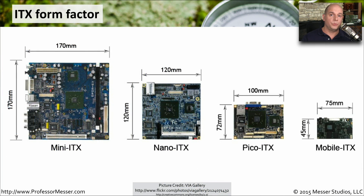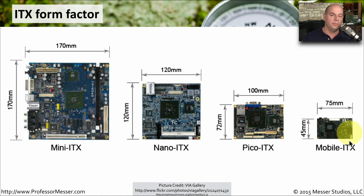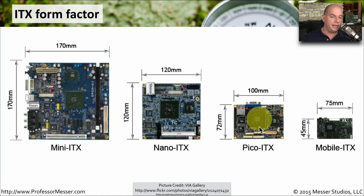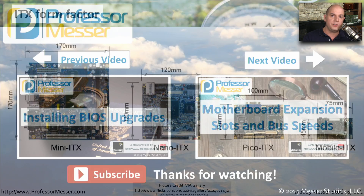If you thought the Mini ITX was small, look at these other ITX models: the Nano ITX, the Pico ITX, and the Mobile ITX. These are all shown to scale, and we're getting smaller and smaller motherboards. The Mobile ITX might be perfect as a mobile computer inside a car or other mobile device. The CPU itself takes up a huge amount of room on the Pico ITX. They don't have a huge amount of computing power or expansion, but if all you need is a single purpose, the ITX motherboard may be for you.